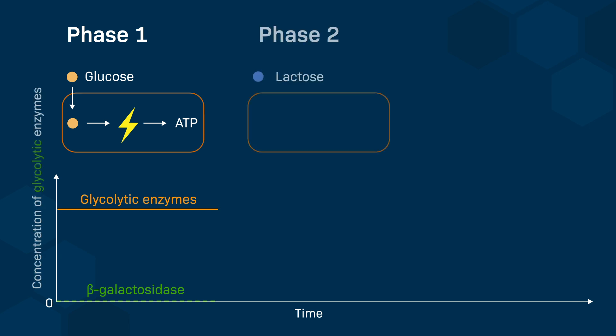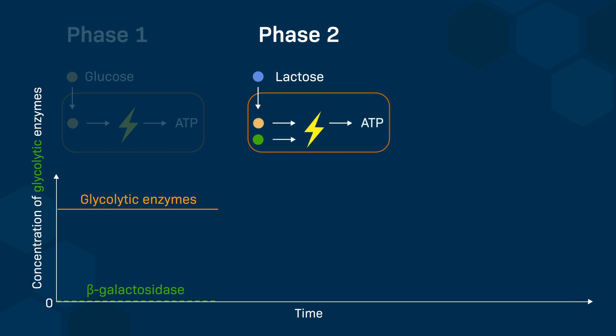During the second phase of growth, there is a change in carbon source, and lactose replaces glucose as the only source of carbon available. The lactose is taken up by the bacteria and cleaved into a molecule of glucose and a molecule of galactose by beta-galactosidase, and the glycolytic enzymes that are still at high concentration will break down glucose and galactose to produce ATP.